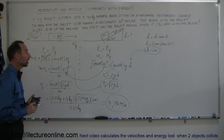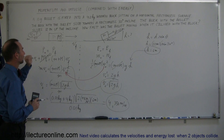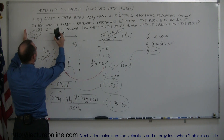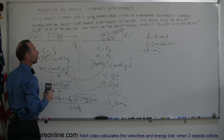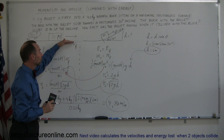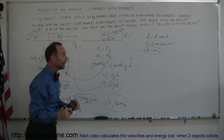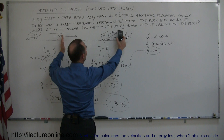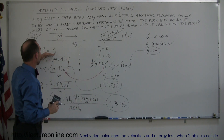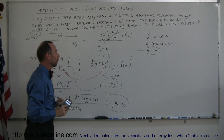Recapping what we just did: we had a situation where a bullet collided with a block. For the collision, we use conservation of momentum. Then, as soon as the bullet and block are moving to the right on a horizontal frictionless surface and then up the incline, eventually stopping, we use conservation of energy for that part of the problem.